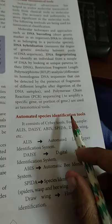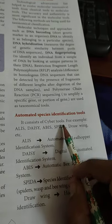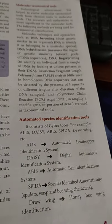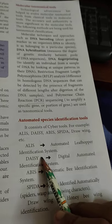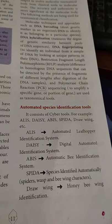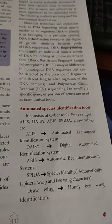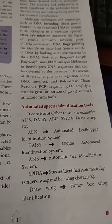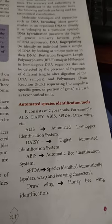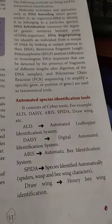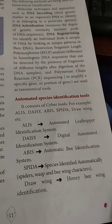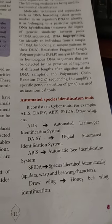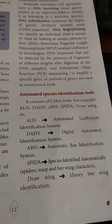Automated species identification tools consist of cyber tools, for example: ALICE (Automated Leaf Hopper Identification System), DAISY (Digital Automated Identification System), ABYSS (Automated Bee Identification System), and SPIDER (Species Identified Automatically using wasp, vespid, and bee wing characters), and DRAW (Drawing Honey Bee Wing Identification).